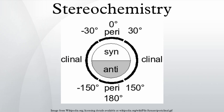In 1874, Jacobus Henricus van't Hoff and Joseph LeBel explained optical activity in terms of the tetrahedral arrangement of the atoms bound to carbon.